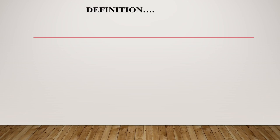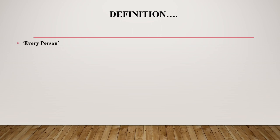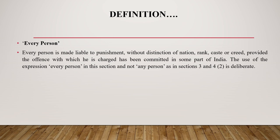There are certain terms which need to be understood under Section 2 of IPC. The first one is 'every person.' Every person is made liable to punishment without distinction of nation, rank, caste or creed, provided the offence with which he is charged has been committed in some part of India.